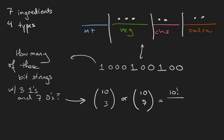Both are equal to 10 factorial over 3 factorial 7 factorial, which is 10 times 9 times 8 over 3 times 2 times 1, which is 120. So the maximum number of different prices of the burrito is 120.